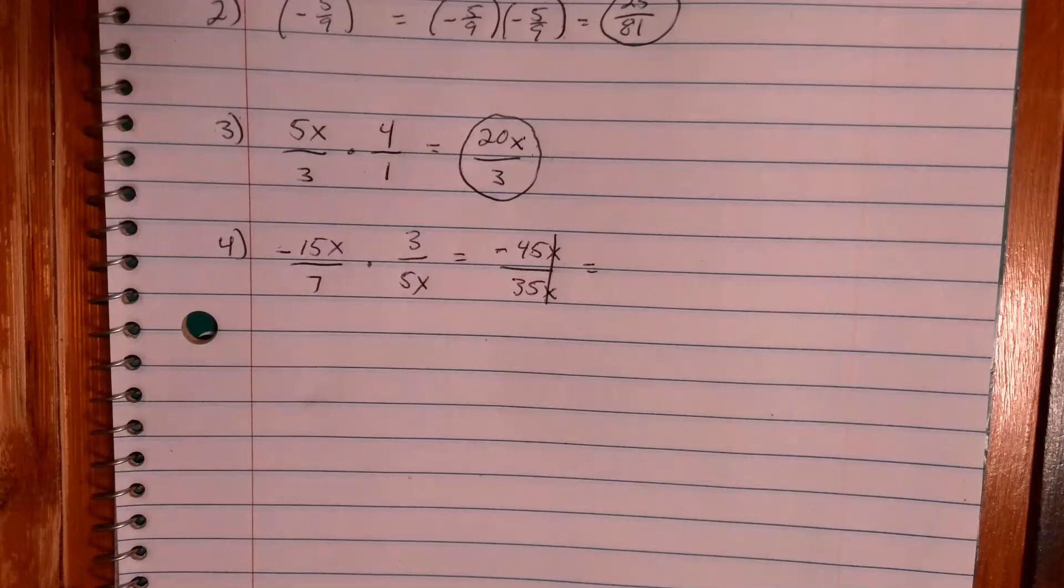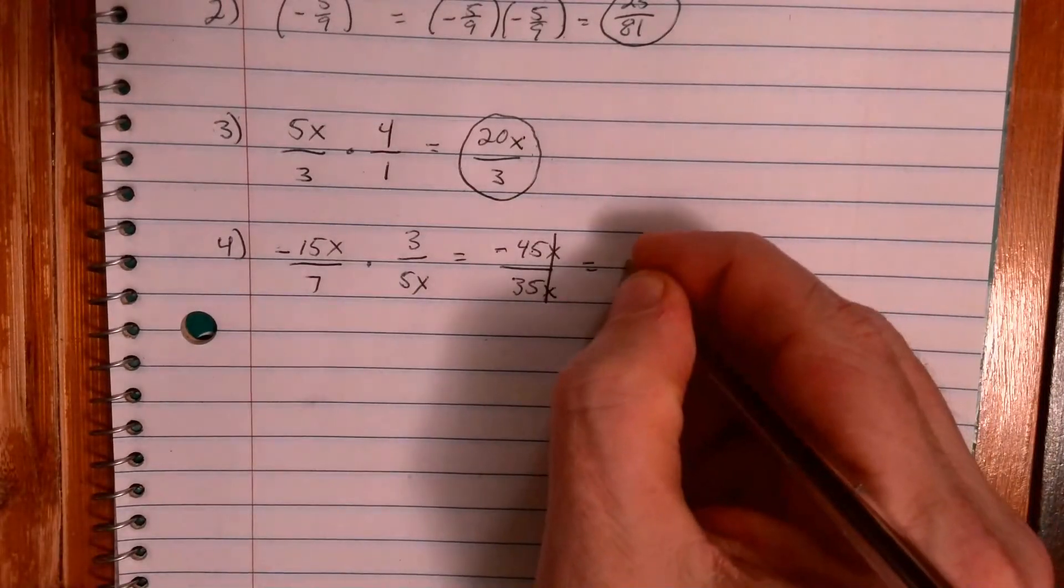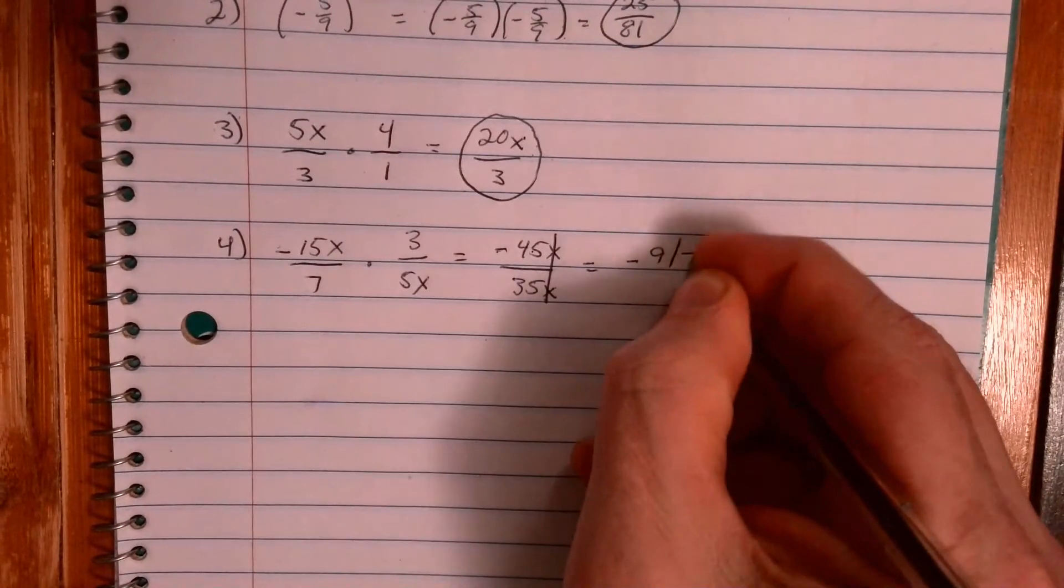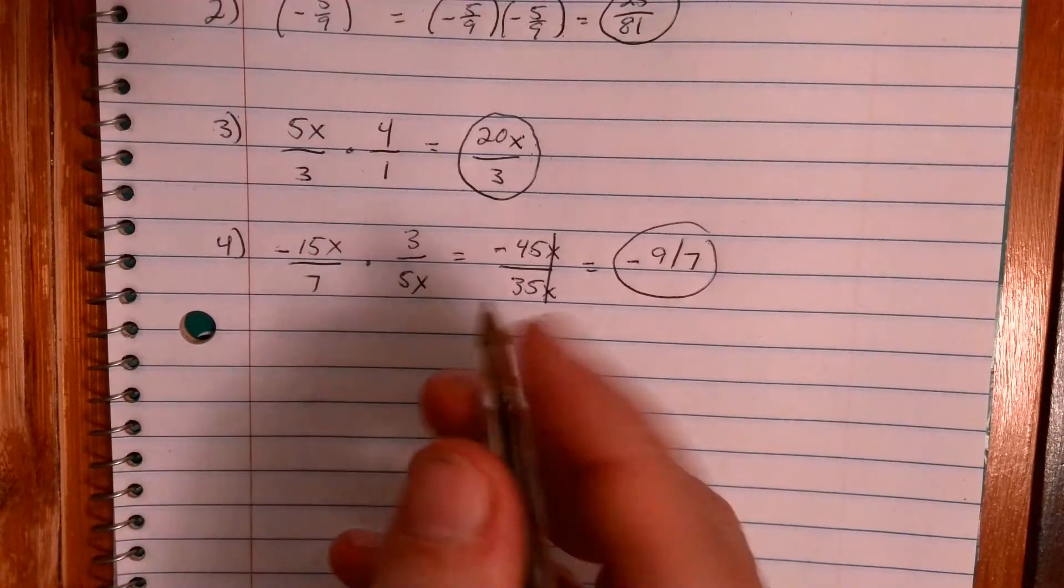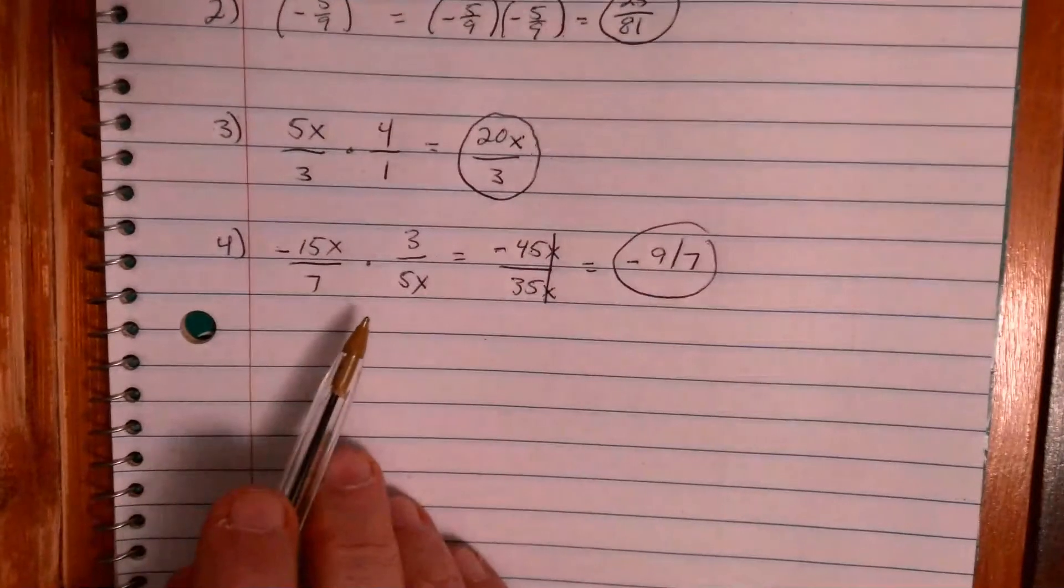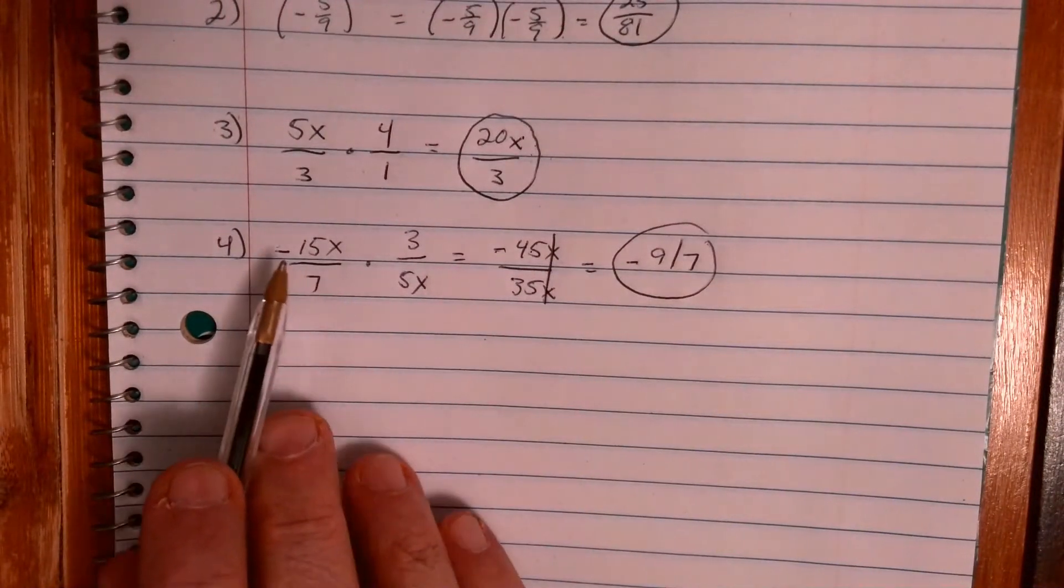Okay, but we can keep going from here. One, the x's just cancel, all right, because that's just x over x. And 5 goes into both of those, so this becomes negative nine-sevenths. Okay, which is your final answer.